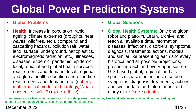Global Problem — Health: increase in population, rapid aging, climate extremes, compound and cascading hazards, pollution, illnesses, diseases, endemic, pandemic, epidemic, local, regional, and global health services requirements and demand, local, regional, and global health education and expertise requirements and demand, etc. Global Solution — Global Health Systems: learn, archive, and teach all available data, information, diseases, infections, disorders, symptoms, diagnosis, treatments, actions, models, and similar; present each and every historical and possible projection; present open-source GIS-based global, regional, and site-specific diseases, infections, disorders, symptoms, diagnosis, treatments, actions, and similar data and information, and many more.